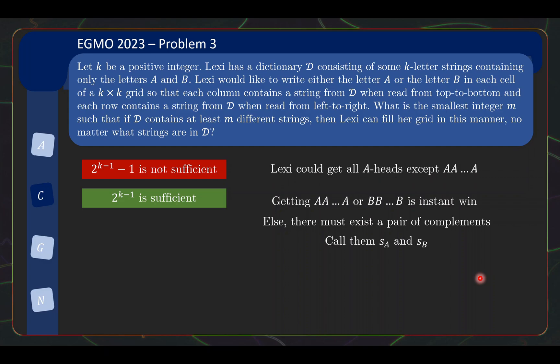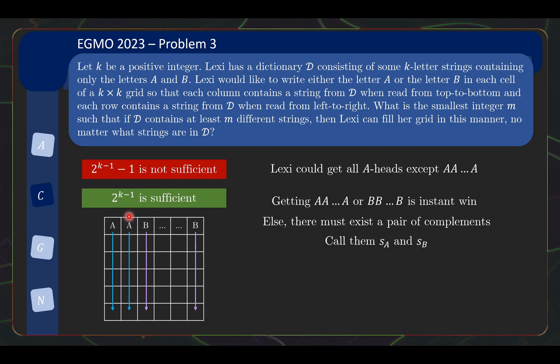Let's say the complements—let's name the string SA and SB for the string that starts with A and the string that starts with B. Then in your grid, put the first row using SA. Now if your column starts with A, you fill downwards with SA. If your column starts with B, you fill downwards with SB. So all the columns by construction are from the dictionary because they are either SA or SB. The thing to check is that each row must be SA or SB, which will then conclude the proof.